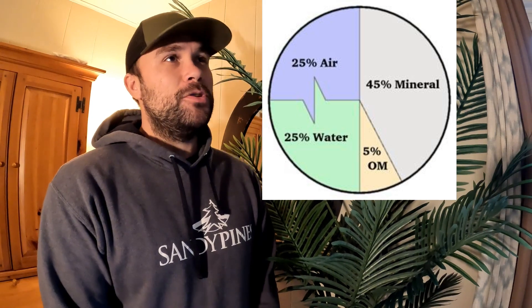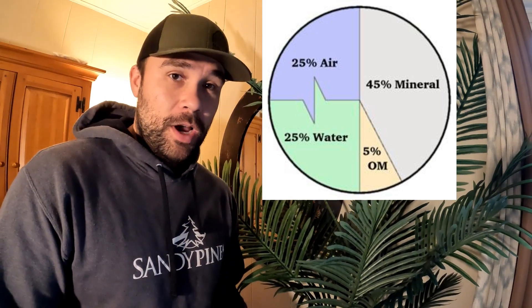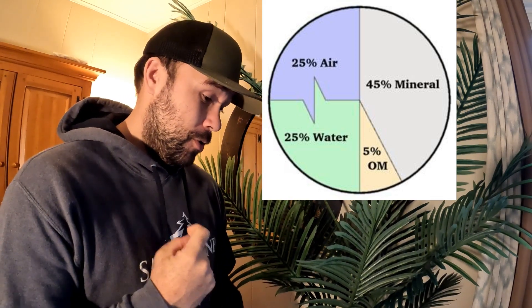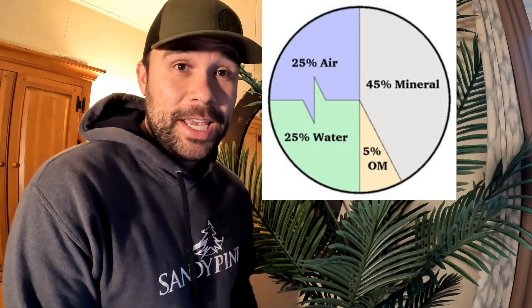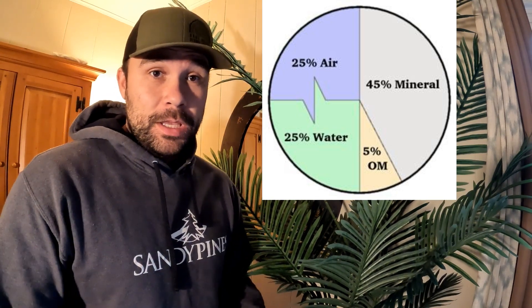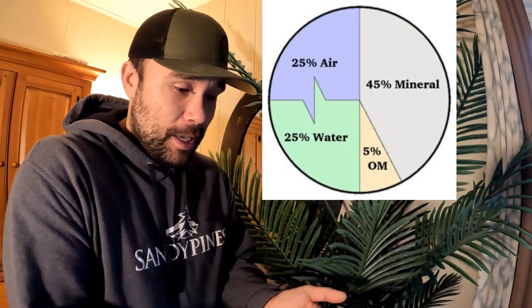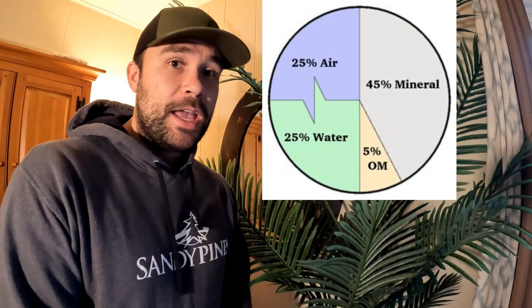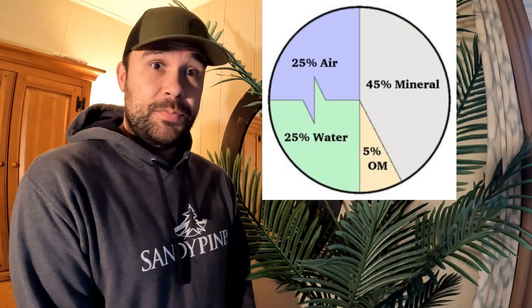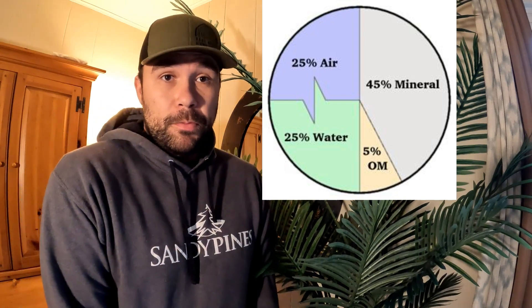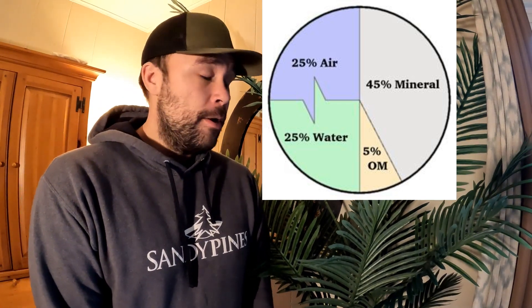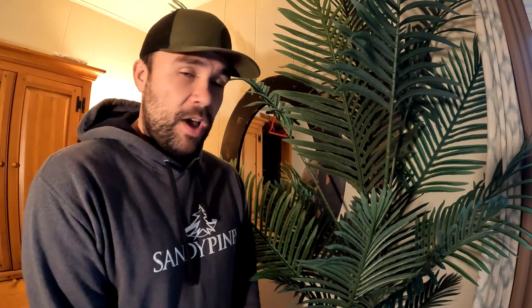Your soil is made up of 45% mineral solids like your clays, your silt, and your sand. And if you take a handful of dirt and look at it, 50% of that is actually just space filled with water or air. And 5% is organic matter.